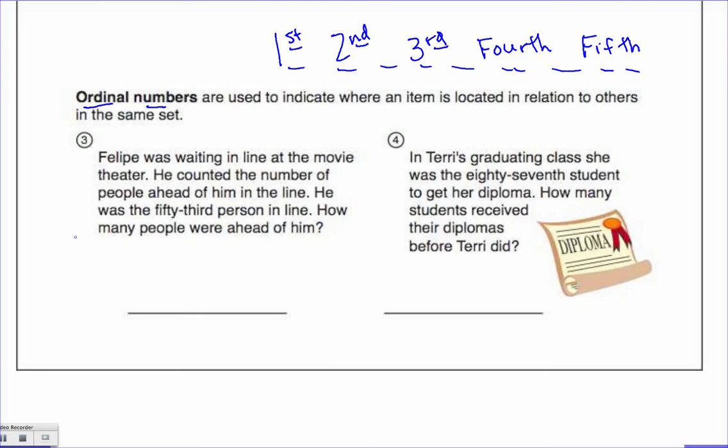Philippe was waiting in line at the movie theater. He counted the number of people ahead of them in the line. He was the 53rd person in line. How many people were ahead of him?